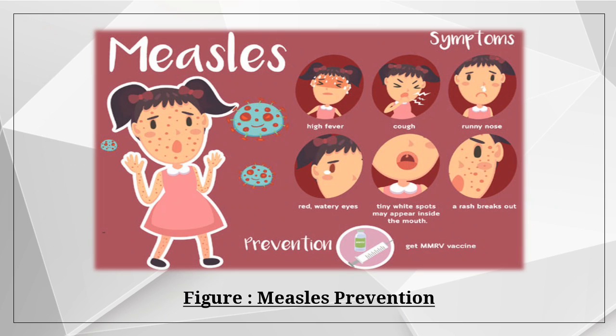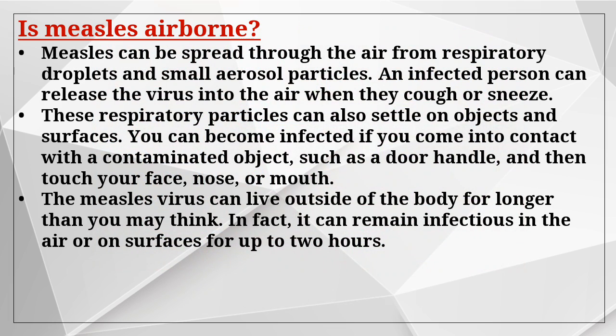Measles is prevented by the MMR vaccine. Measles can be spread through the air from respiratory droplets and small aerosol particles. An infected person can release the virus into the air when they cough or sneeze. These respiratory particles can also settle on objects and surfaces. You can become infected if you come into contact with a contaminated object such as a door handle and then touch your face, nose, or mouth. In fact, the measles virus can remain infectious in the air or on surfaces for up to two hours.